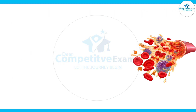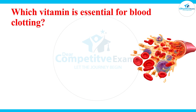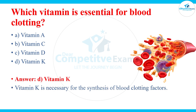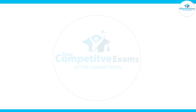Which vitamin is essential for blood clotting? Which vitamin is required in the body to stop bleeding and make blood clot? The answers are vitamin A, vitamin C, vitamin D, and vitamin K. The correct answer is vitamin K. Vitamin K is necessary for the synthesis of blood clotting factors.